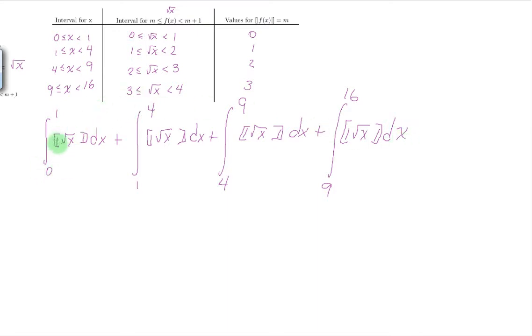Now in this interval the value is 0, so we have from 0 to 1 we have 0. From 1 to 4 we have 1. From 4 to 9 we have 2, and from 9 to 16 we have 3.